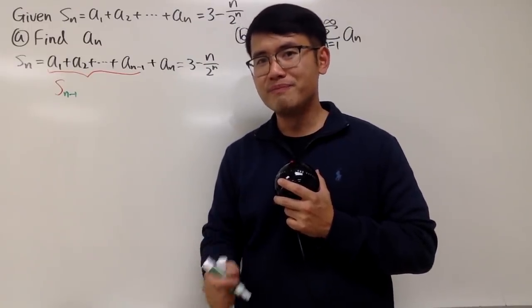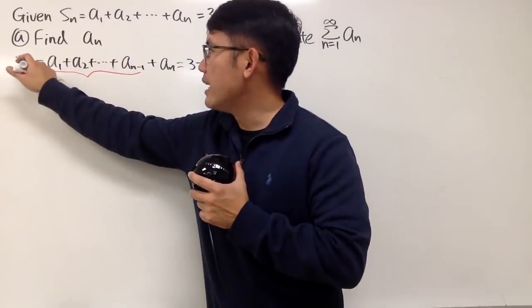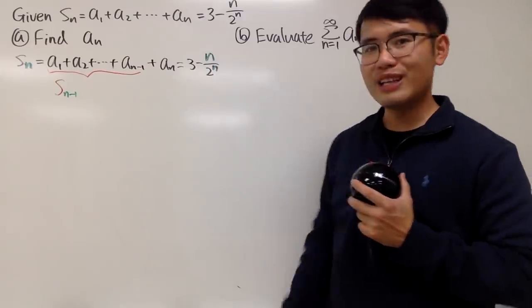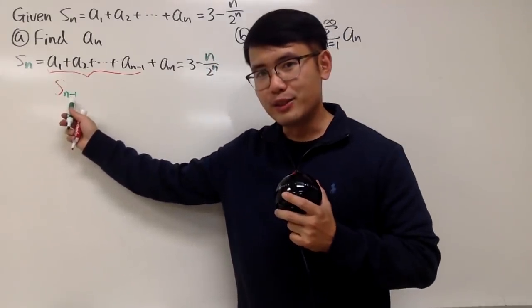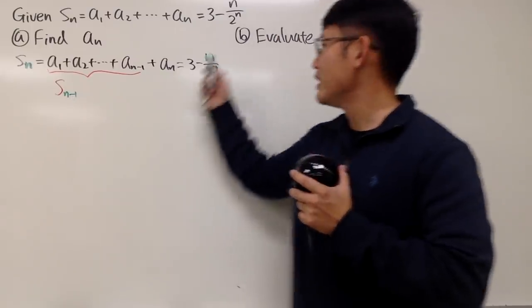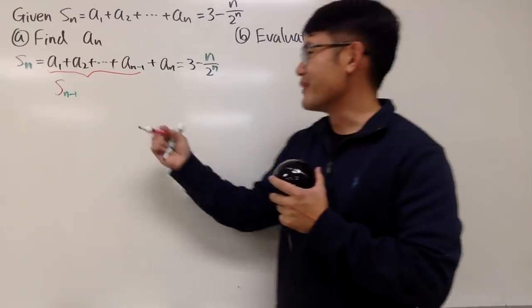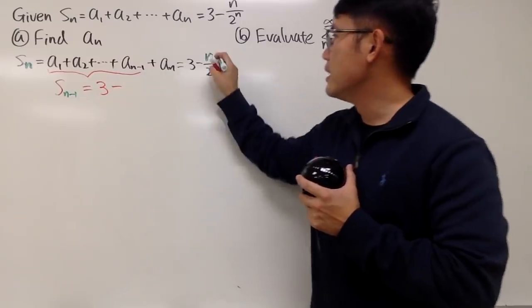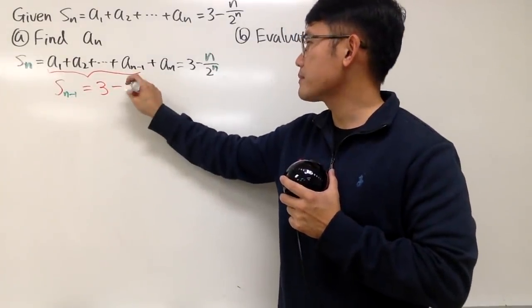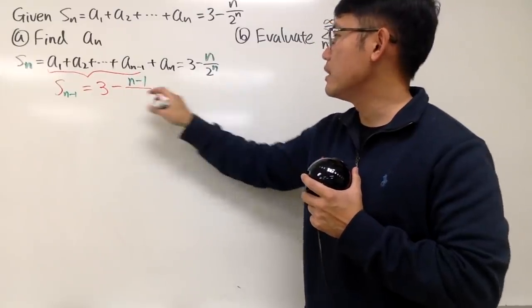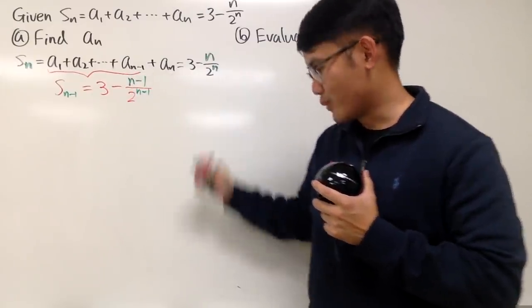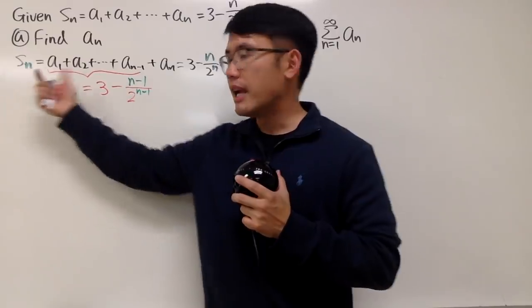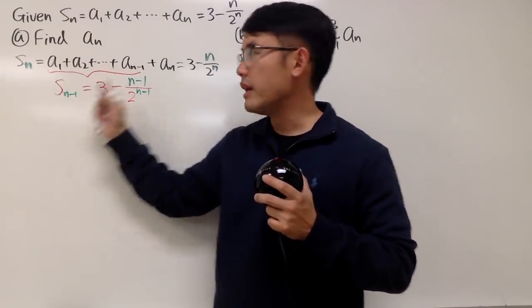And now can we find out a formula for this? Yes. Because earlier we see that $S_n$ is equal to $3 - n/2^n$, like this. And now, this index is just $n-1$. All I have to do is put $n-1$ here and here. That's pretty much it, right? So here we go, $S_{n-1}$ is equal to $3 - (n-1)$ divided by $2^{n-1}$, like that.